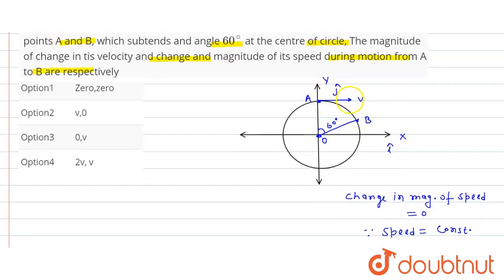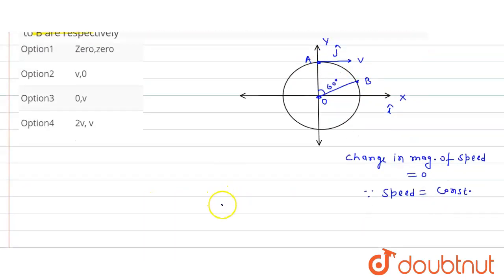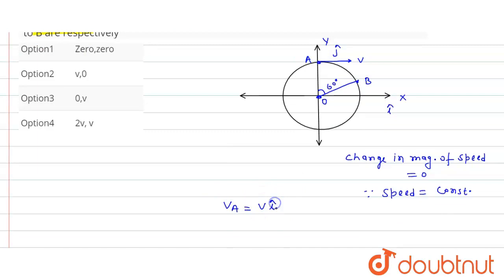Here, v_A is the velocity at point A. We can write v_A is equal to v î (v times i-cap).